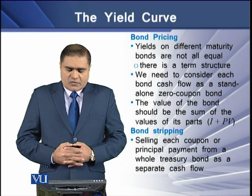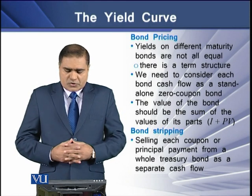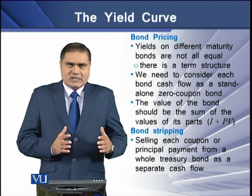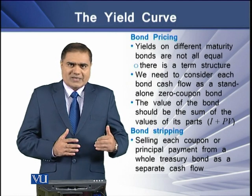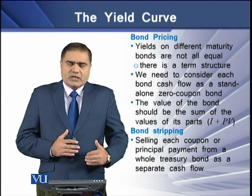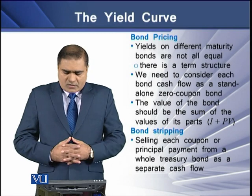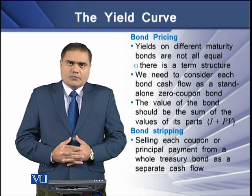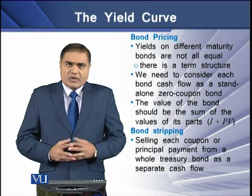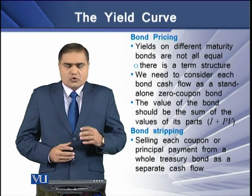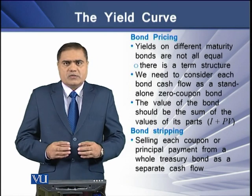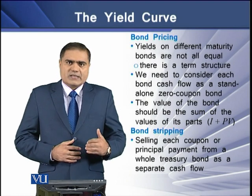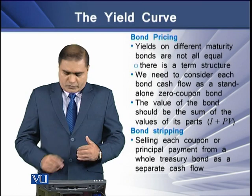The value of such a bond should equal the sum of the value of all its parts — that is, the coupon interest and the face value of the bond. Bond stripping means selling each coupon or principal repayment from a whole treasury bond as a separate individual cash flow.